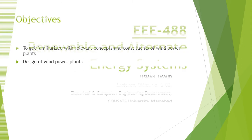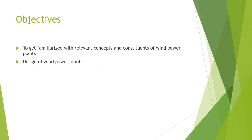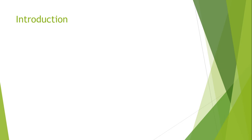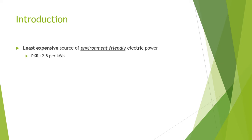We will be discussing and getting familiarized with the concepts of wind power. Wind power is one of the cheapest ways of producing electricity and it is also very environment friendly. The cost is approximated to around 12.8 rupees per kilowatt hour from the source of windmills.